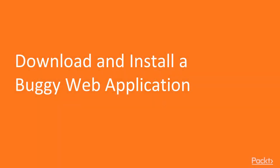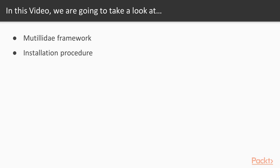In this video we will learn about the Mutillidae framework, which is also called the buggy web application framework, and how we can install it and host it inside a XAMPP server. First of all, you need to open the Kali Linux operating system.